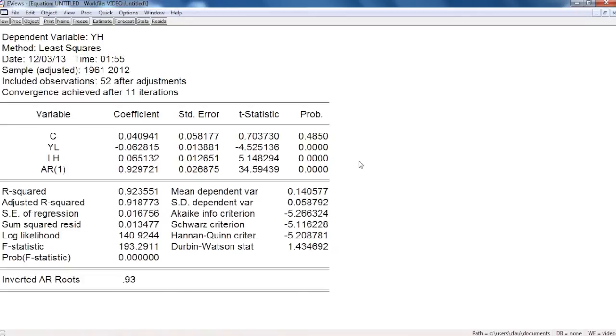As we can see, we have an F statistic of 193, which is far more superior than the 34 we had on our previous model. Also, the independent variables are still significant, and the R squared is so much higher now.